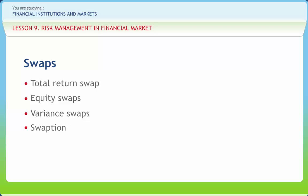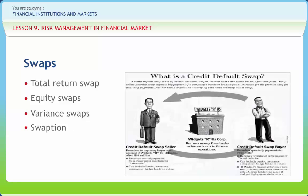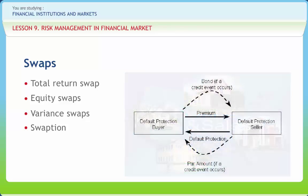A swaption is an option granting its owner the right, but not the obligation, to enter into an underlying swap. A payer swaption gives the owner the right to enter into a swap where they pay the fixed leg and receive the floating leg. A receiver swaption gives the owner the right to enter into a swap where they receive the fixed leg and pay the floating leg.